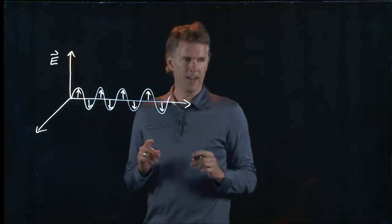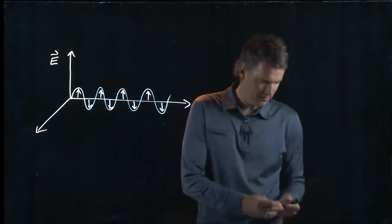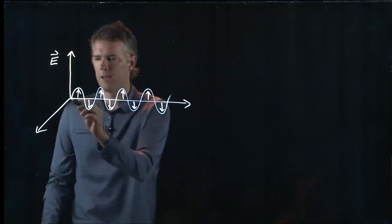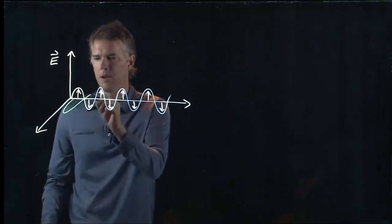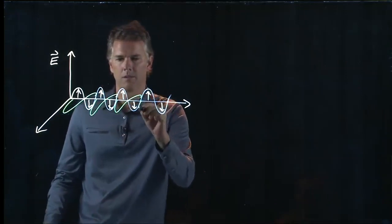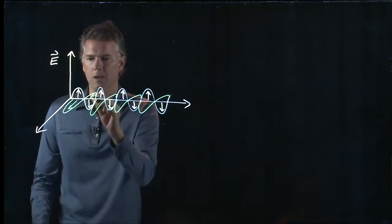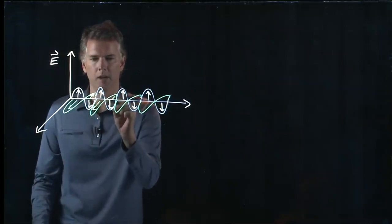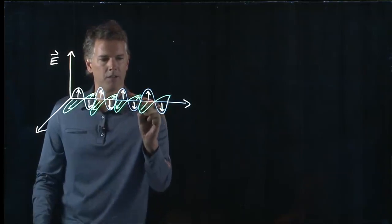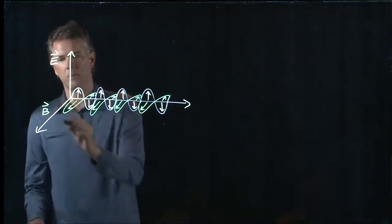But the B field was at a right angle to that. So if we draw the B field, let's try it in green. The B field in fact comes into and out of the page. And so it's pointing out of the page and into the page over and over again. Both of these things are of course oscillating sinusoidally.